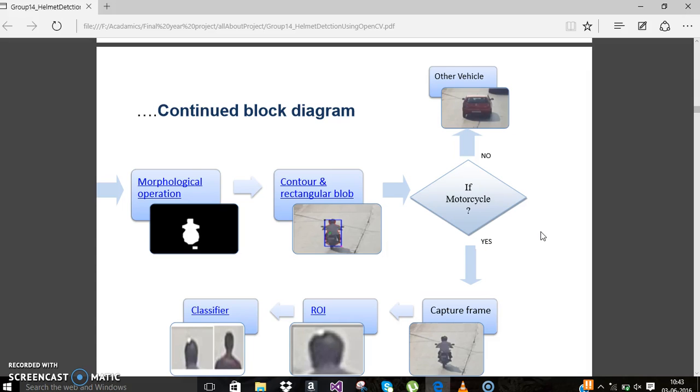The next step is contour and rectangular blob. Here, the red color portion places a contour over the vehicle only, and then after that, around the contour, a rectangular blob has been created.